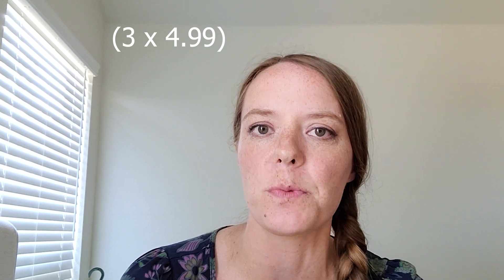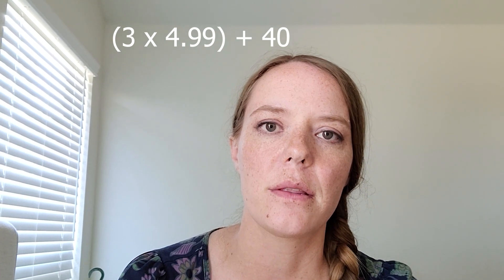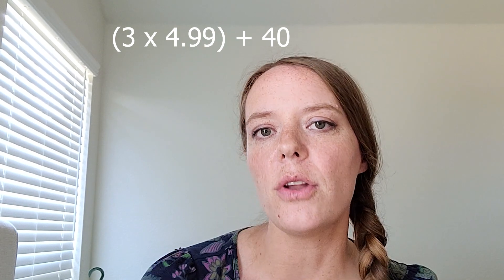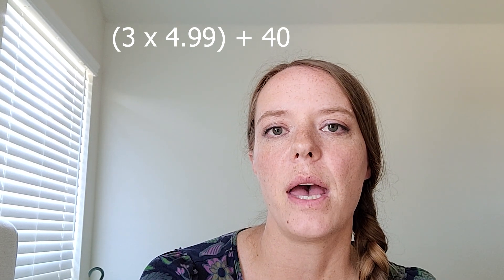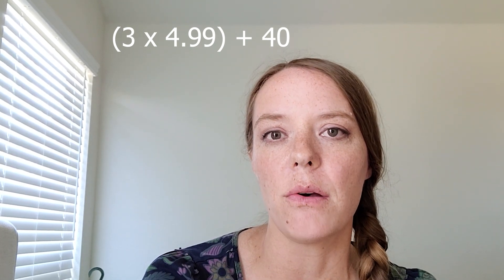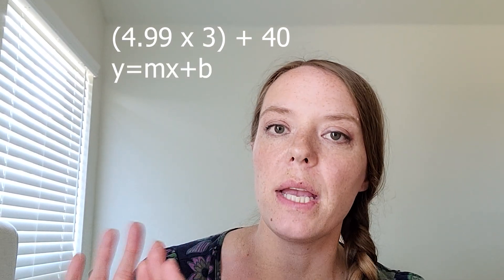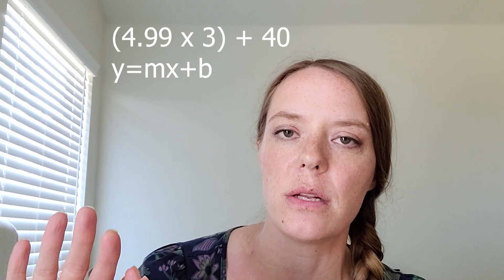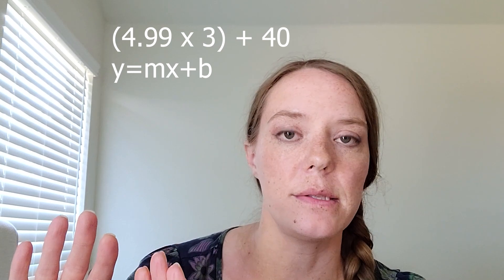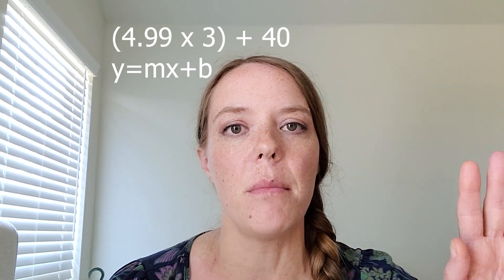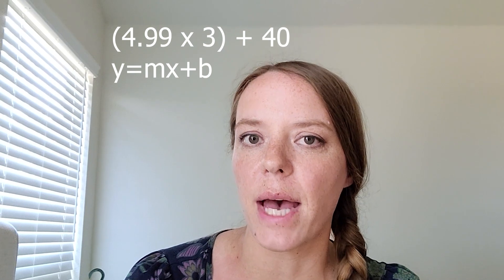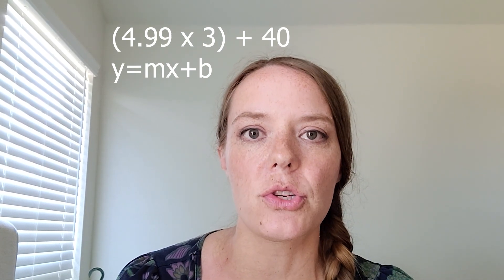Okay, so some of you are probably thinking that we need to do three times that $4.99, so that can be the first part of the equation, and then we need to add the $40 that the base game price was. And you're going to notice with non-proportional relationships that we are going to see them in the form of y equals mx plus b, and that just means that we're going to have a multiplication problem first, so that mx, there's a coefficient that multiplies by x, and then we're going to add some amount. And I'll show you a lot more about that type of equation as it also relates to graphs.